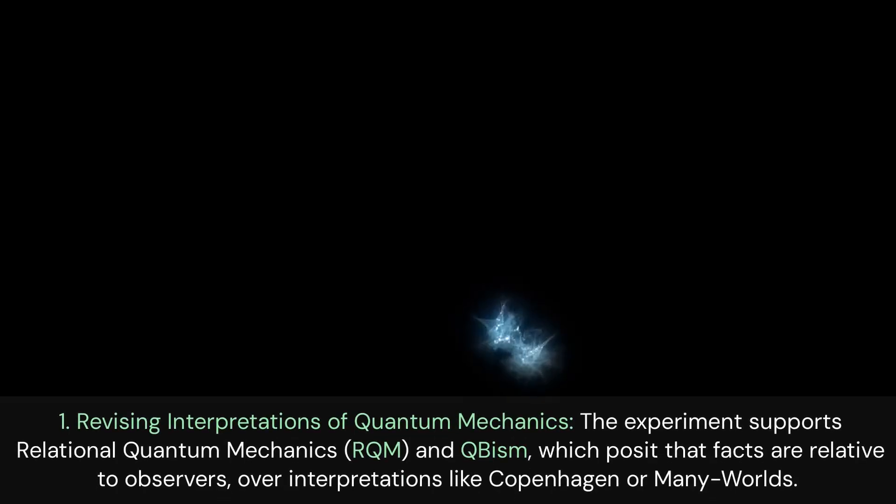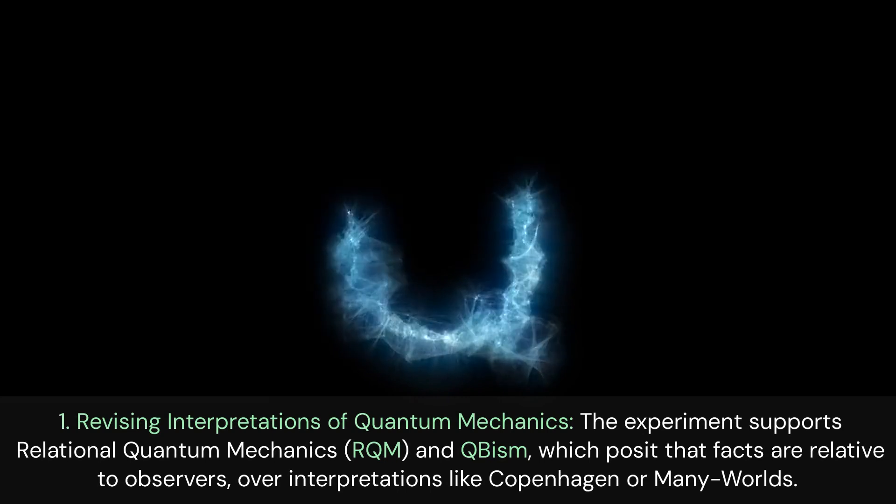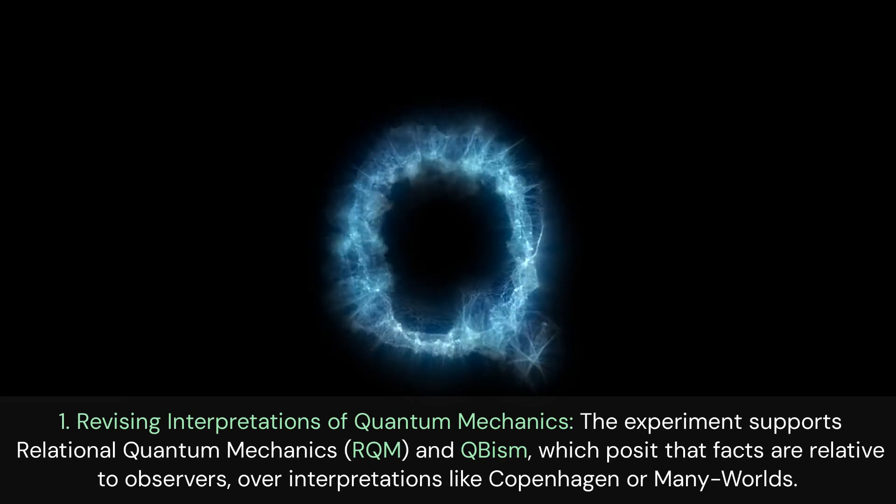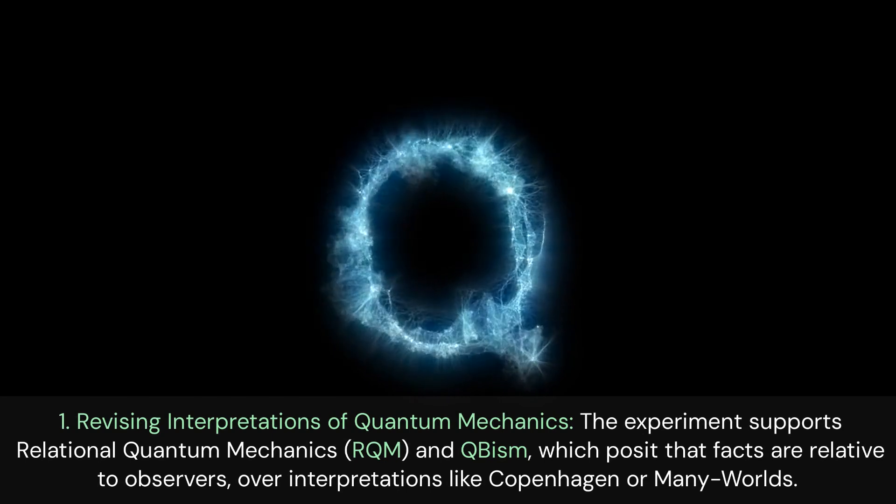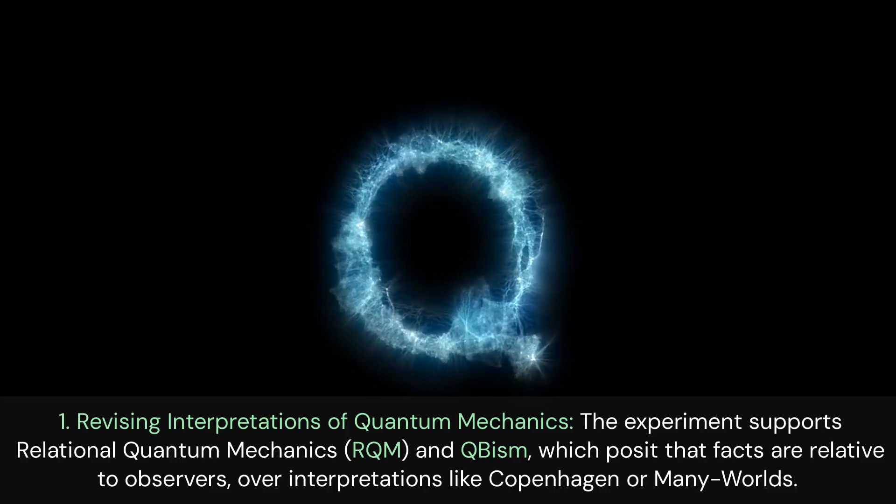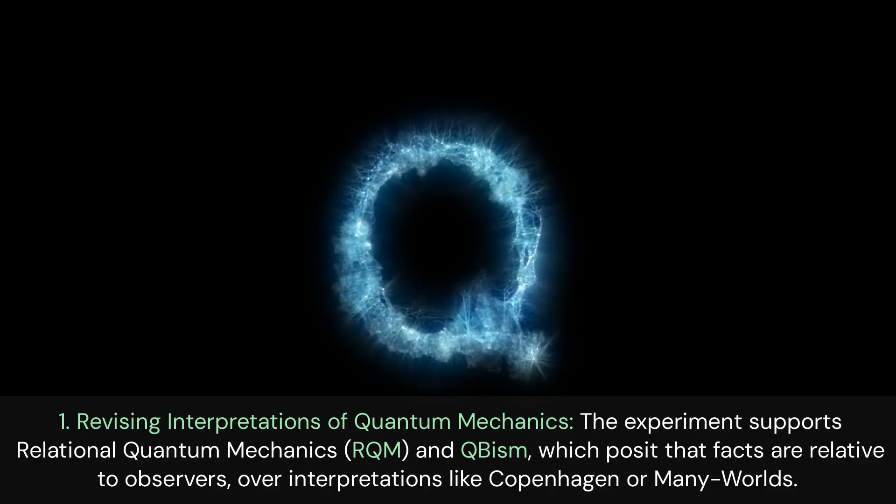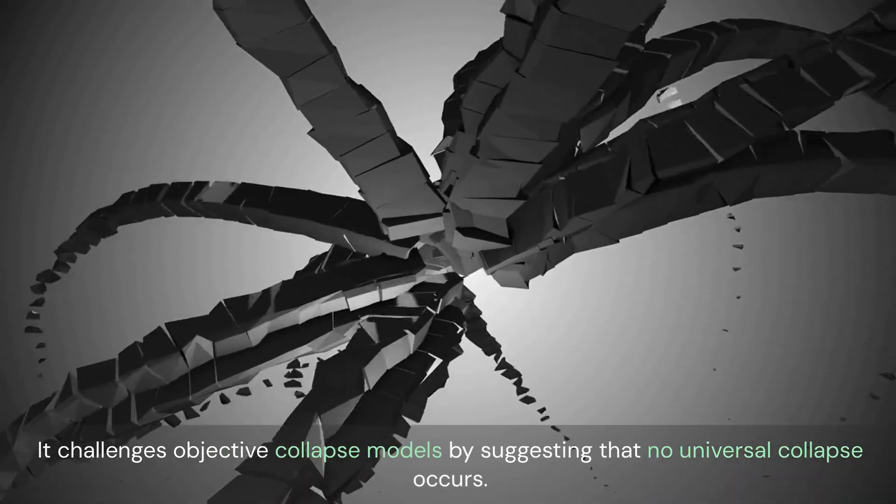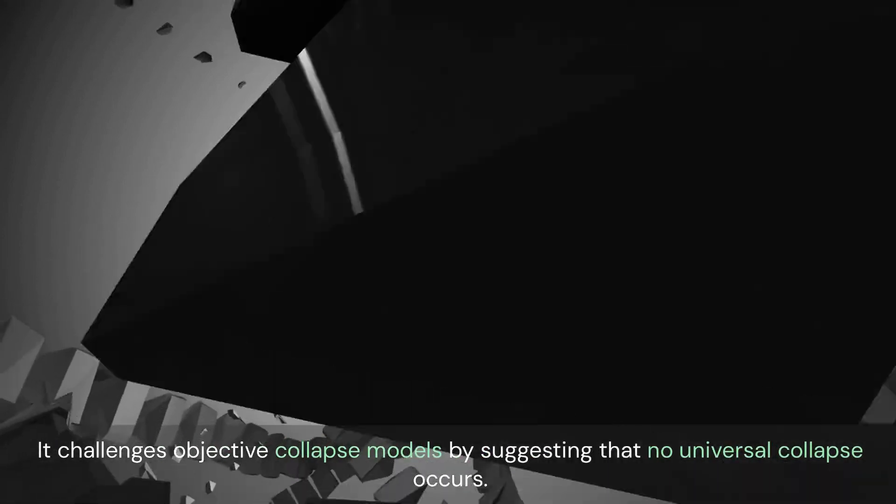There are also broader theoretical impacts. Revising interpretations of quantum mechanics: the experiment supports relational quantum mechanics (RQM) and cubism, which posit that facts are relative to observers, over interpretations like Copenhagen or many worlds. It challenges objective collapse models by suggesting that no universal collapse occurs.